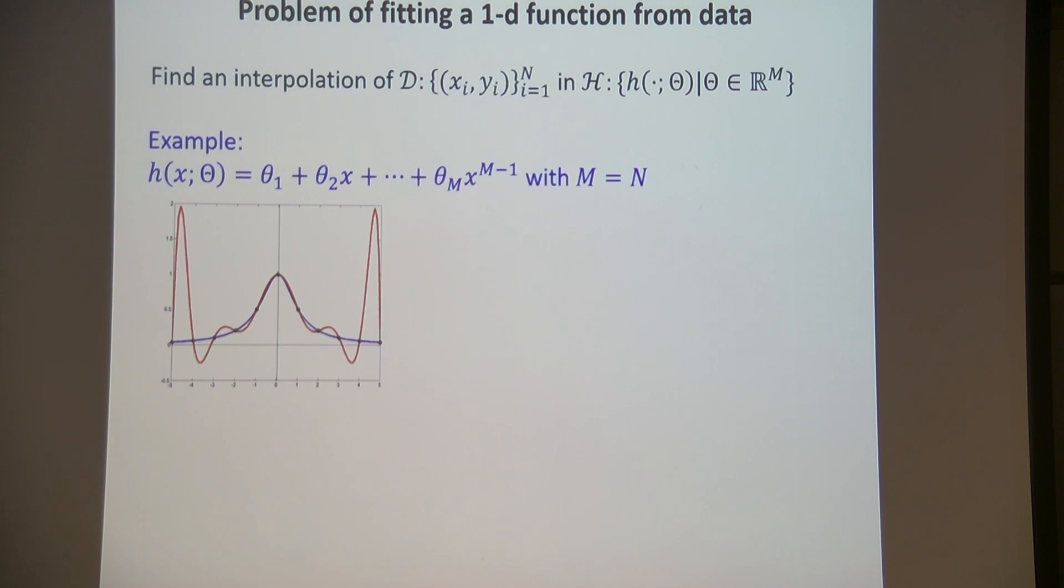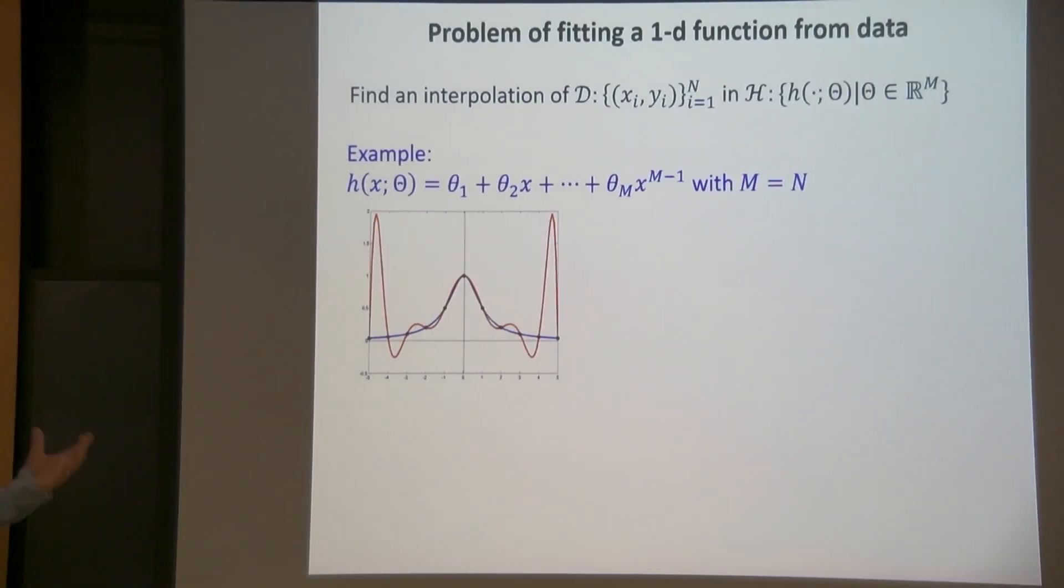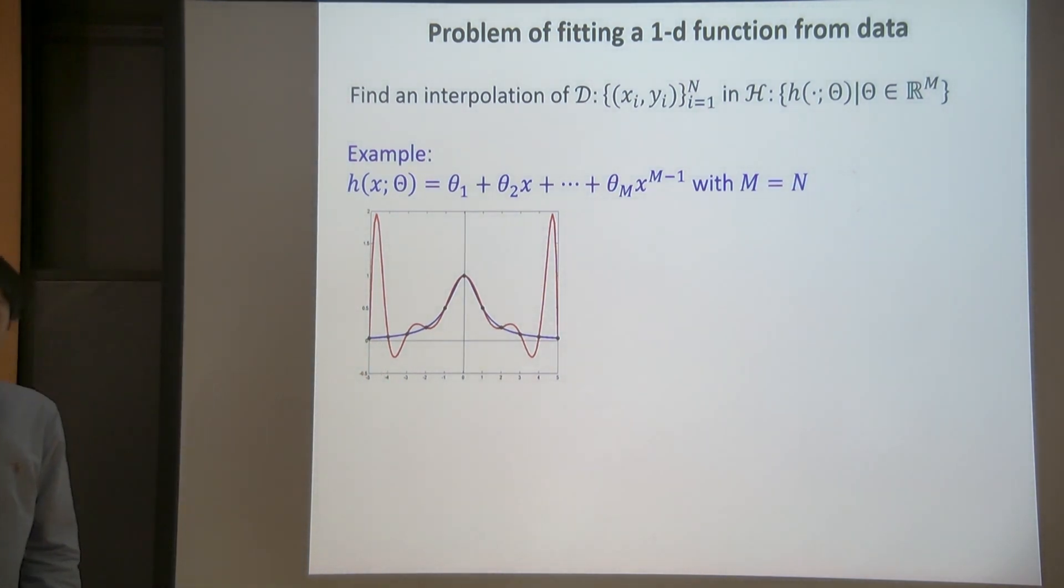So let me give you an example. This H can be a space of polynomials, and specifically we consider M equal to N so that we can find a unique function in that space that goes through each point exactly. However, we know that this algorithm suffers from the Runge phenomena, meaning that it can overfit the data with artificial oscillatory components.